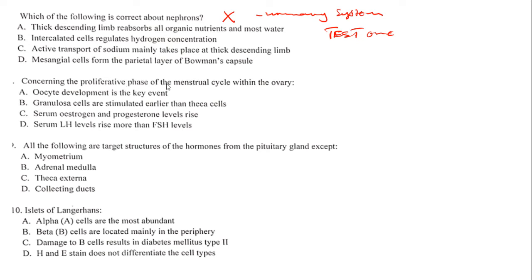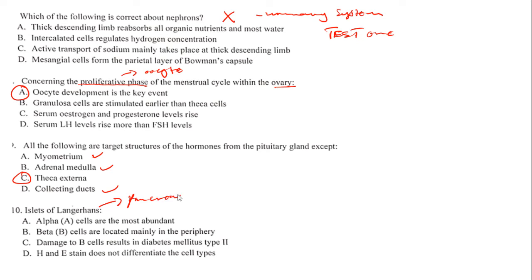Concerning the proliferative phase of the menstrual cycle within the ovary — in the proliferative phase, the main event is the formation and development of the oocyte. The following question asks about a target structure of a hormone from the pituitary gland, except one. The one that is not a target is the islets of Langerhans.